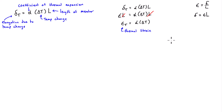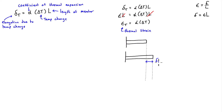If a member is unconstrained and undergoes a temperature change, it will experience thermal strain — expanding or contracting depending on heating or cooling — but there will be no associated stress. For example, a member connected to a wall on one side and free on the other: if the system heats up, the rod is free to expand outward. That elongation δT equals α·ΔT·L. It has strain but no stress because there's no reaction resisting the expansion.